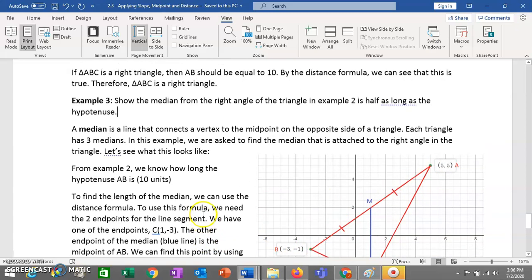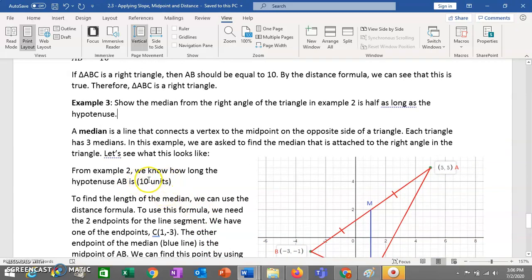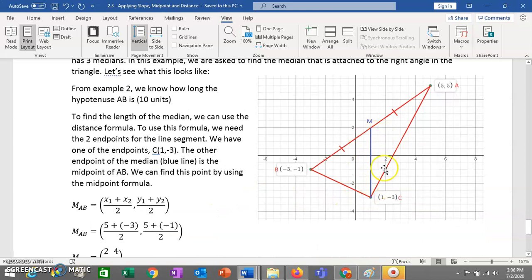So we want to show that this is half the length of the hypotenuse. Well, we already have the length of the hypotenuse from the previous question. We know it's 10 units long. So if we can get the length of this line, we can see, is it actually half of the hypotenuse? To get the length of the line, you can use the distance formula, which we have down here. But to use the distance formula, you need your two endpoints. So you have this point, but you need this point. But this point is the midpoint of this line here.